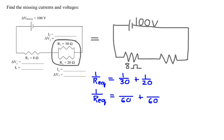And so 1 over 30 would be the same as 2 over 60, and 1 over 20 would be the same as 3 over 60. And so 1 over R_eq would be the same as 5 over 60, and so the equivalent resistance would be 60 over 5. And when you divide 60 by 5, you should get something like 12.